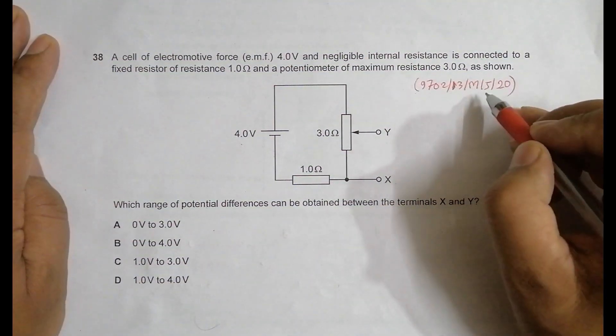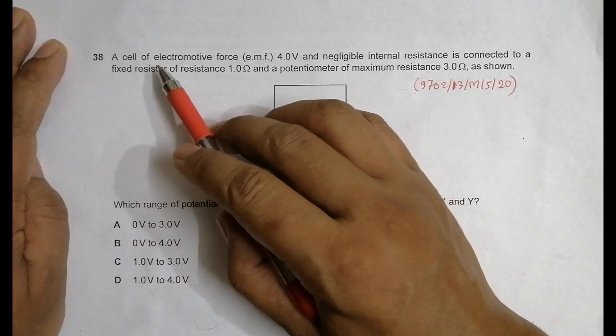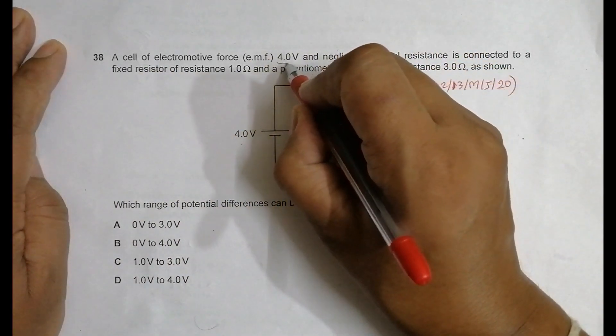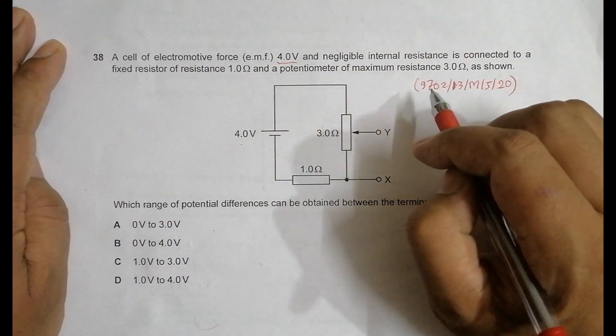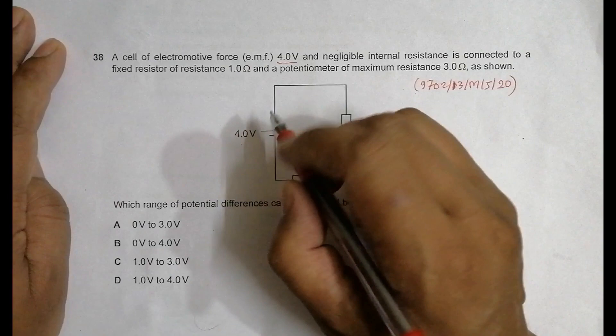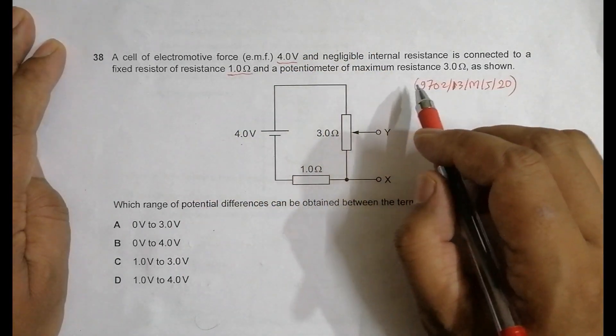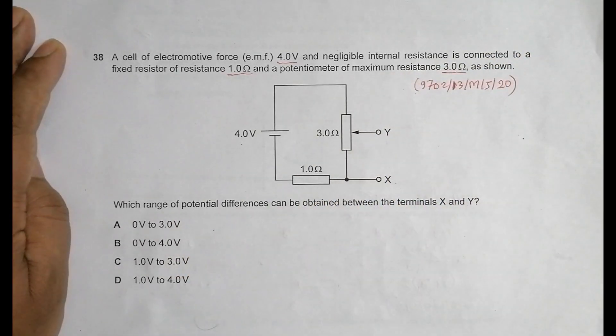Hello folks, this is 2020 May June paper 13 and the question number is 38. It says that a cell of electromotive force EMF of 4.0 volts and a negligible inner resistance is connected to a fixed resistor of resistance 1.0 ohm and a potentiometer of a maximum resistance 3.0 ohm as shown. What range of potential differences can be obtained between the terminals X and Y?